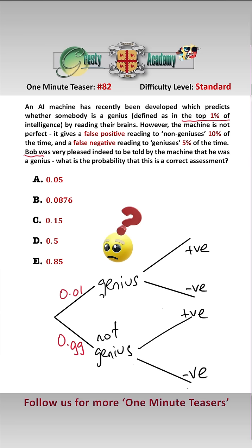And looking at the false positives reading to non-geniuses, if you're not a genius, 0.1 probability is that you are told you're a genius, and therefore 0.9 probability you are correctly told you're not. And there's a false negative 5% of the time here,